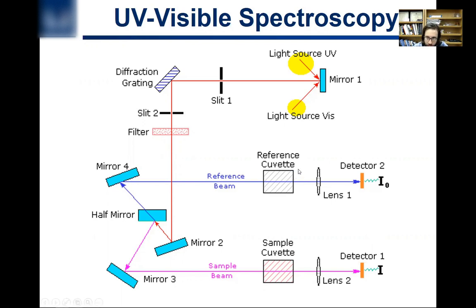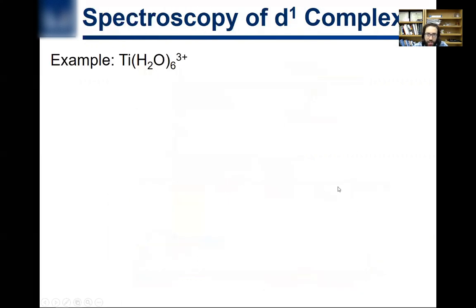So you dissolve the complex in water, and so that's going to be your sample, but your reference is just going to be a blank without the compound, just water. And so then you can compare the intensity of light that reaches the reference detector versus the sample detector, and that's how you make the plot.